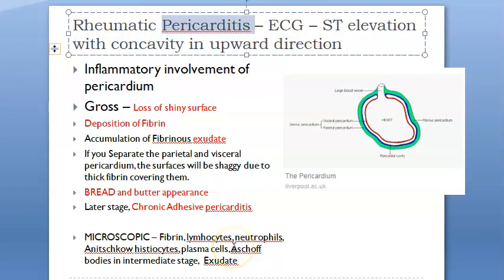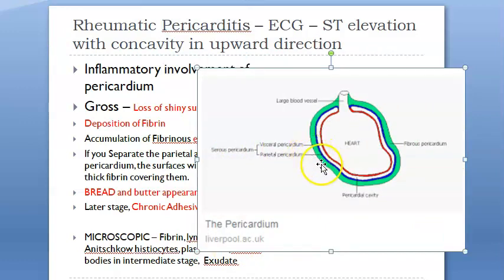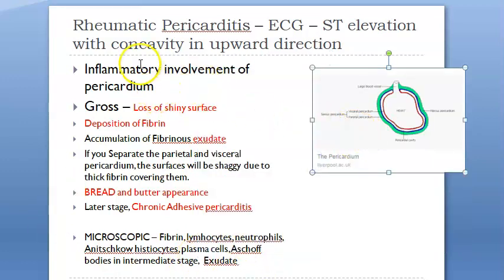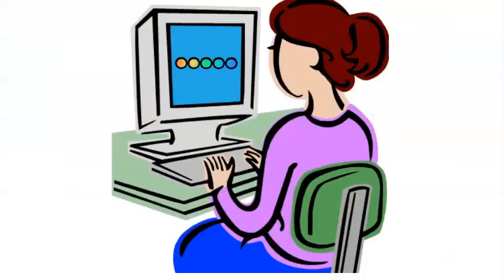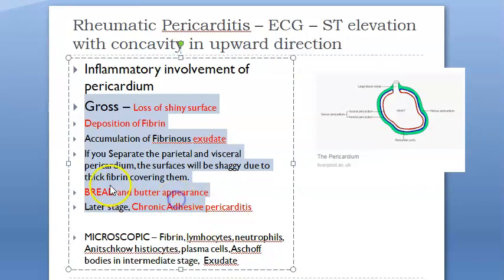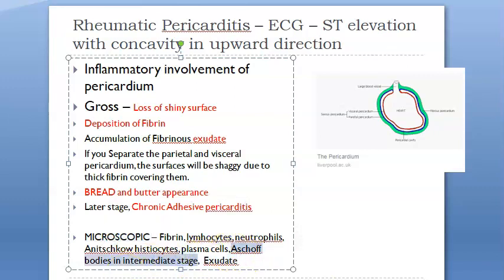Pericarditis involves the outermost layer of the heart. There is visceral and parietal pericardium with the pericardial cavity between them, surrounded by fibrous pericardium. Inflammatory involvement causes loss of the shiny surface and deposition of fibrin exudate, resulting in a bread-and-butter appearance. Chronic adhesive pericarditis can develop. Grossly, this bread-and-butter appearance confirms rheumatic pericarditis; microscopically, Aschoff bodies are again seen.